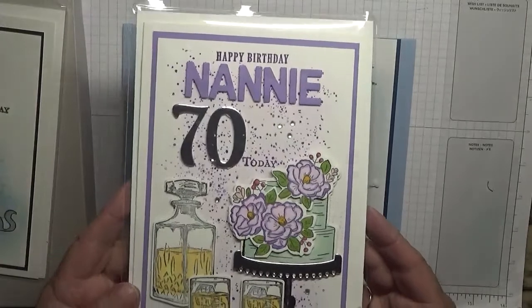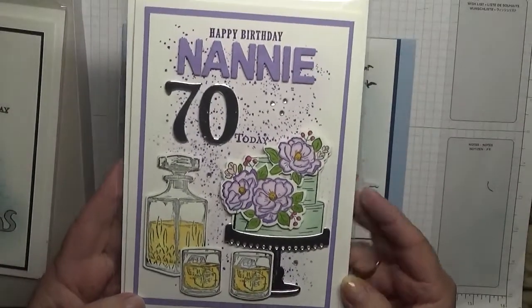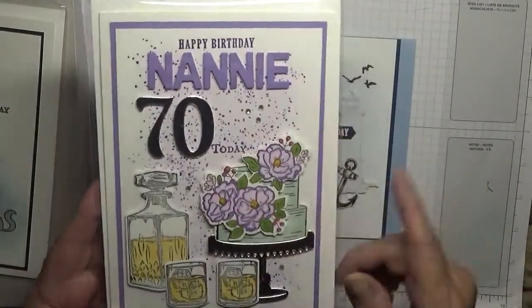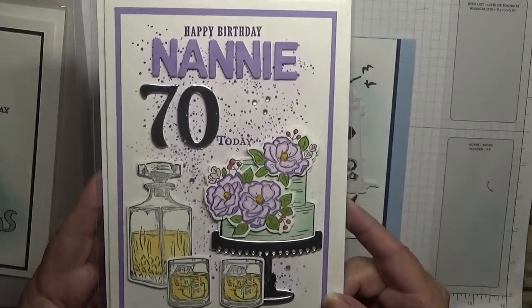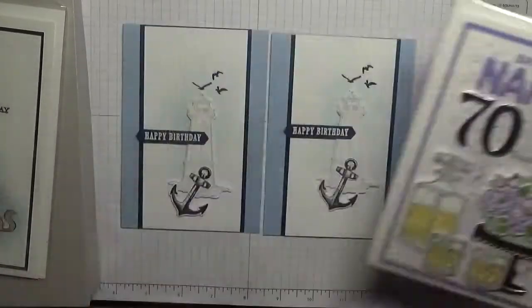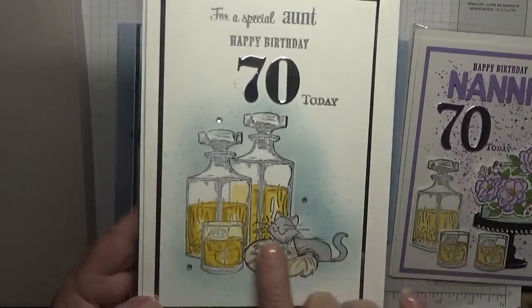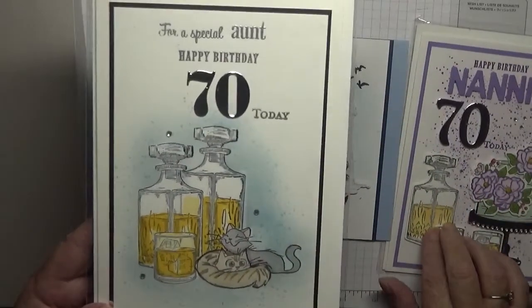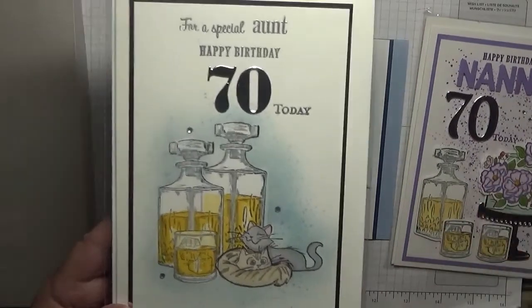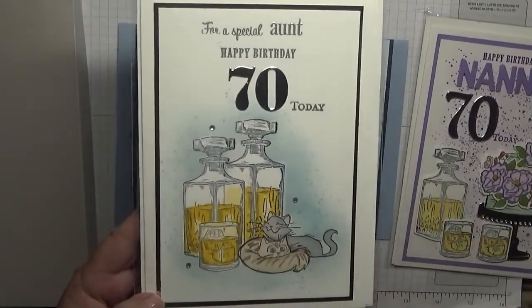This is for my grandchildren's other nanny - that's how they spell it - and they asked me to do that for them. This is for the auntie - she likes her whiskey and her cats. Nanny likes whiskey as well and flowers, so that's why there's whiskey there.